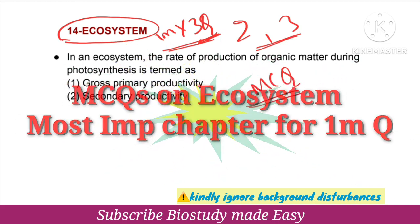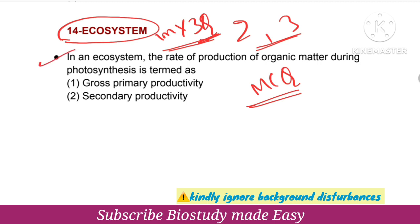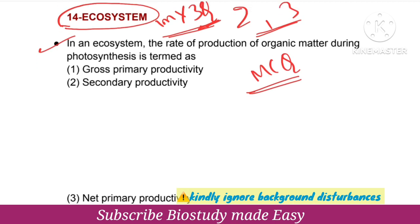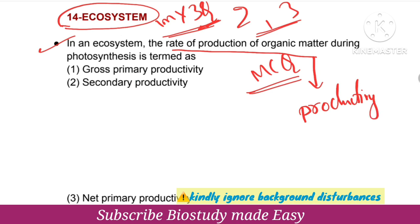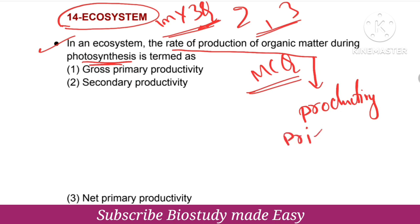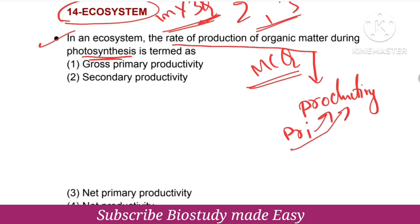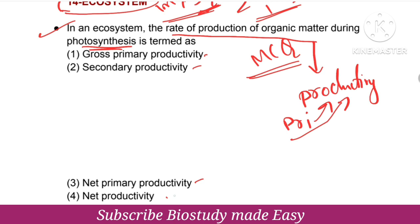First question: In an ecosystem, the rate of production of organic matter during photosynthesis is termed as? The rate of production of organic matter during photosynthesis is primary productivity. The options are gross primary productivity, secondary productivity, and net primary productivity. The answer is gross primary productivity.